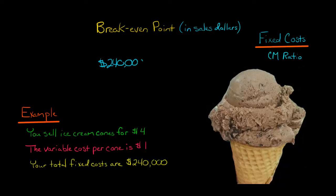But the denominator is a little more tricky. We're going to need to calculate something called the contribution margin ratio. So to get that, we're going to have to first find the unit contribution margin, which is 4 minus 1 is 3. That's our unit contribution margin.